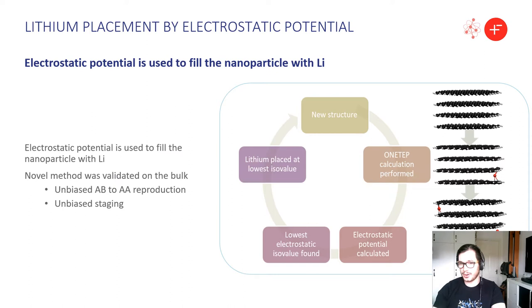This generates a new structure obviously and then we perform this process again and we repeat the cycle endlessly until we get a fully lithiated structure. We were able to validate this method on bulk systems and it was able to reproduce in an unbiased manner, that means we're not telling the lithiums where to go, we're not telling the carbon to move at all. We were able to reproduce in an unbiased manner AB reproduction and lithium staging.